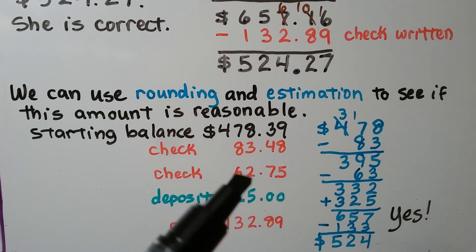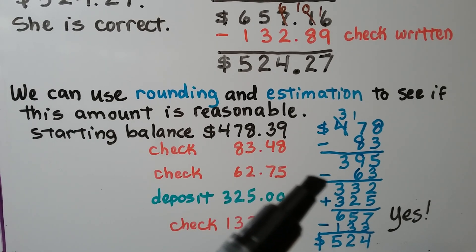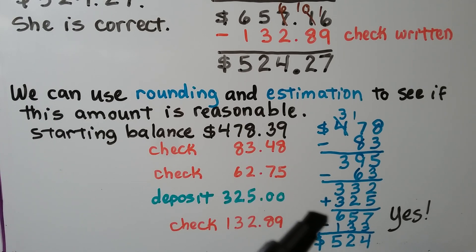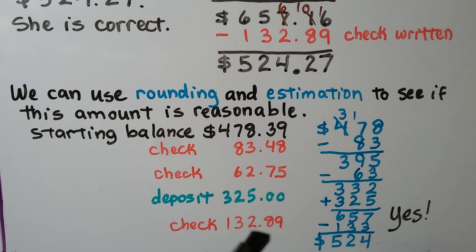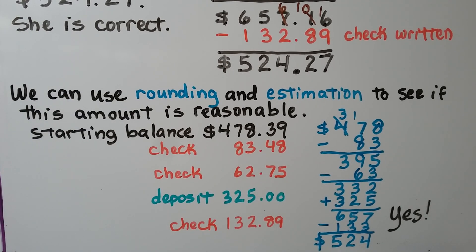For the next check, the seven tells the two in the ones place to round up to three, so we round it to $63. We subtract it and get $332. The deposit of $325 is already rounded; we add it and get $657. We round the last check — the eight tells the two to go up — so we subtract $133 and get an estimate of $524. The actual amount was $524.27, so yes, it's reasonable because our estimate is very close to the exact answer.